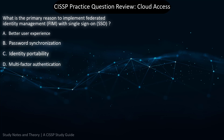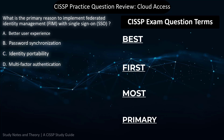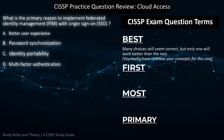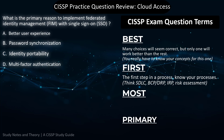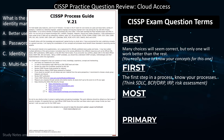CISSP exam questions can use the following terms: best, first, most, and primary. 'Best' means that many choices will seem correct, and they are, but think deeply about your CISSP concepts and you will crystallize the only answer that is better than the rest. 'First' means one thing — know your processes: the first step in the SDLC, in BCP/DRP, in incident response, or risk management.